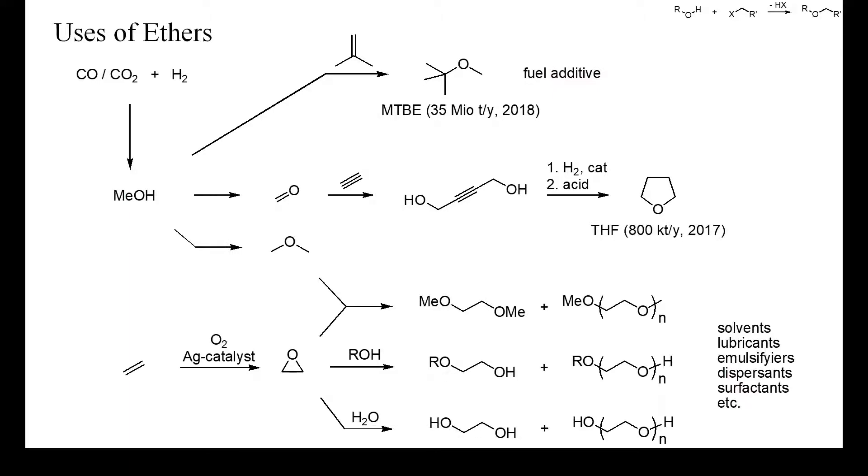A further important group of ethers are the oligomers of ethylene glycol. These are prepared from ethylene oxide by treatment with ethers, alcohols or water and used as solvents or additives in numerous products. These oligomers are more resistant to oxidative degradation than normal alkyl ethers such as THF.